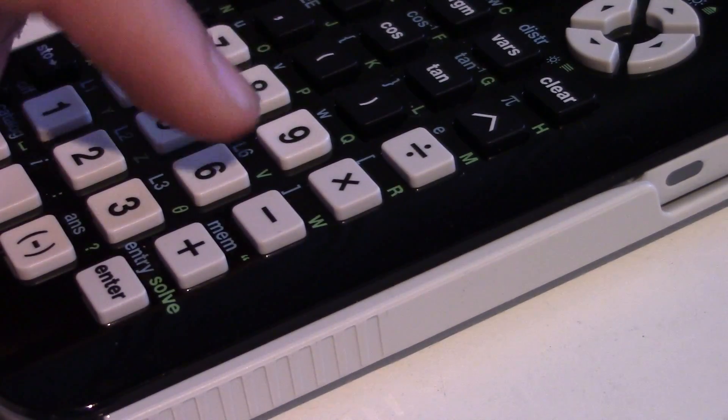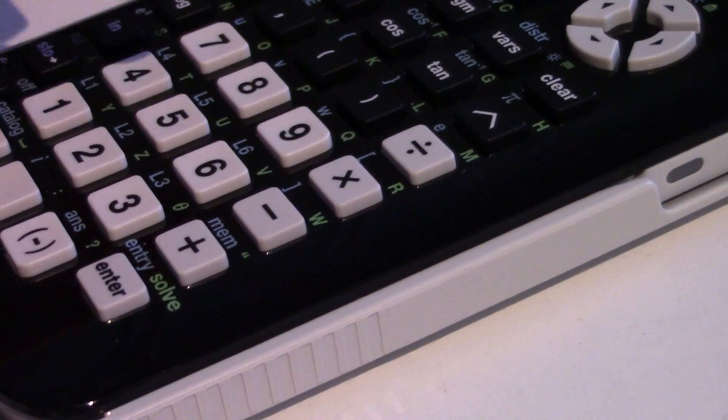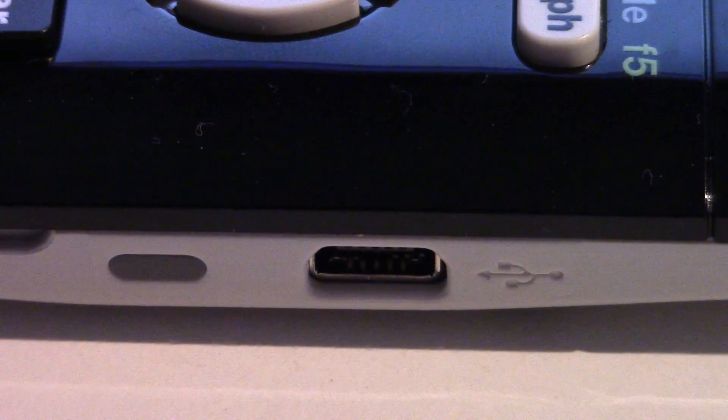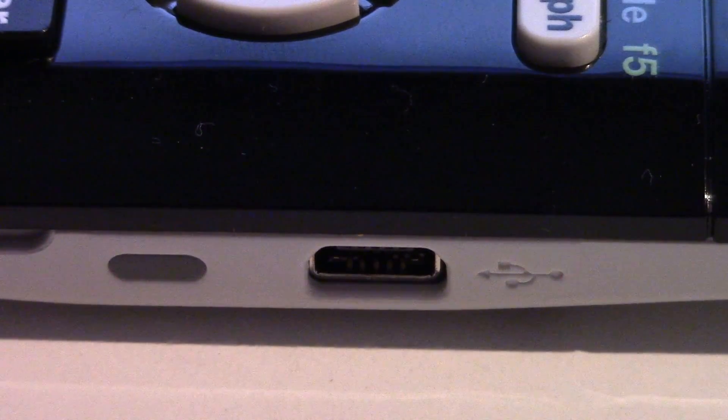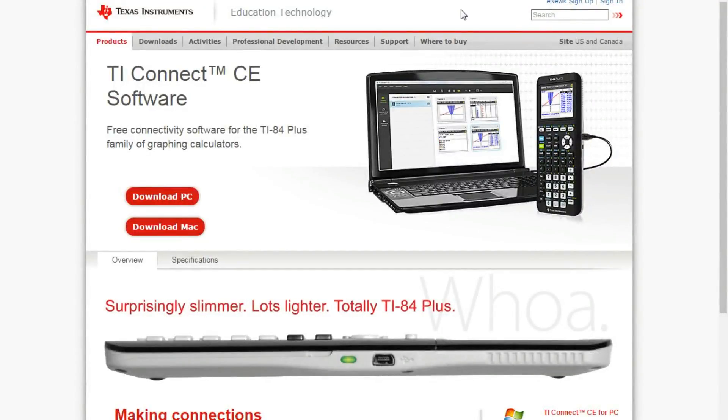On the side of the calculator, you will find this USB port. The USB port can be used to charge the calculator's battery, or you can actually transfer data with it. You can connect the calculator to other TI-84 calculators, but you can also connect it to a computer, and then you can download software onto that computer from the website of Texas Instruments.